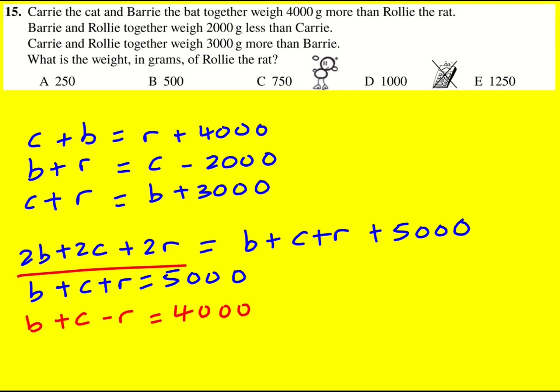This is the key bit. Now I can subtract these equations—subtract the bottom from the top. So I'm going to get 2R, because R minus minus R, and these B and C are going to cancel out. Therefore, 2R = 1000, so R = 500. Rolly the rat weighs 500 grams.